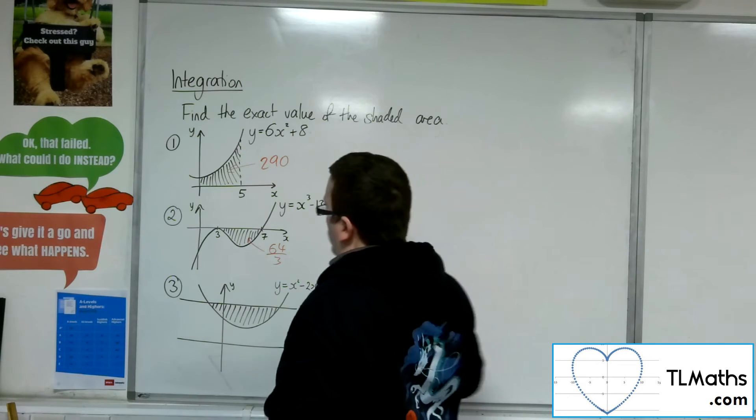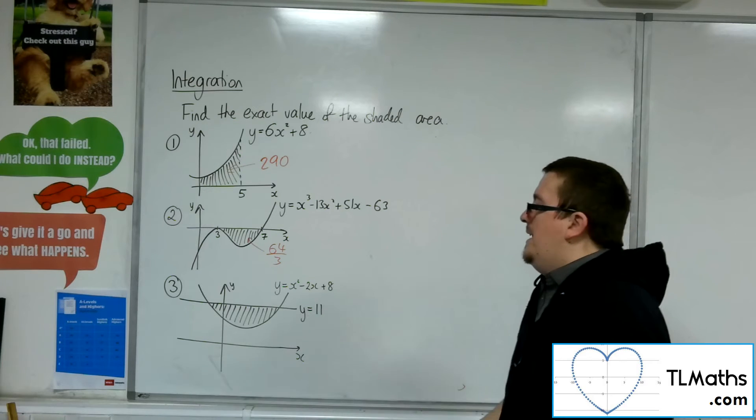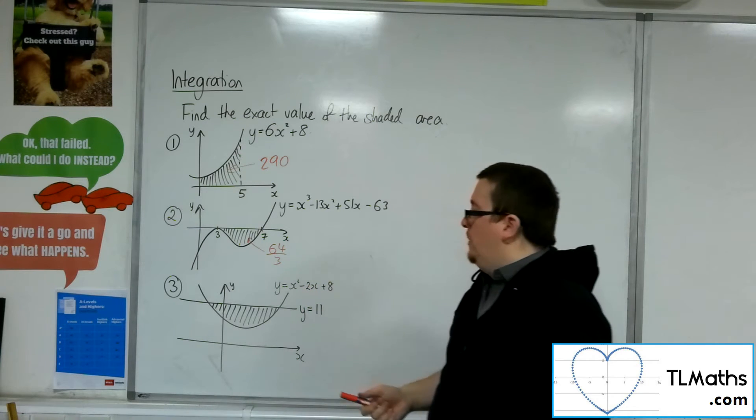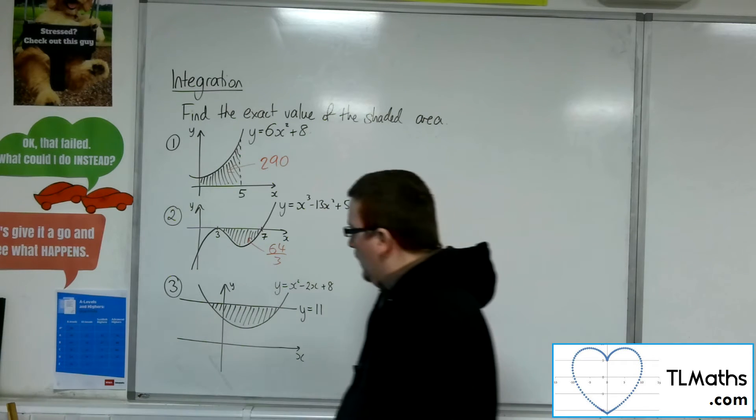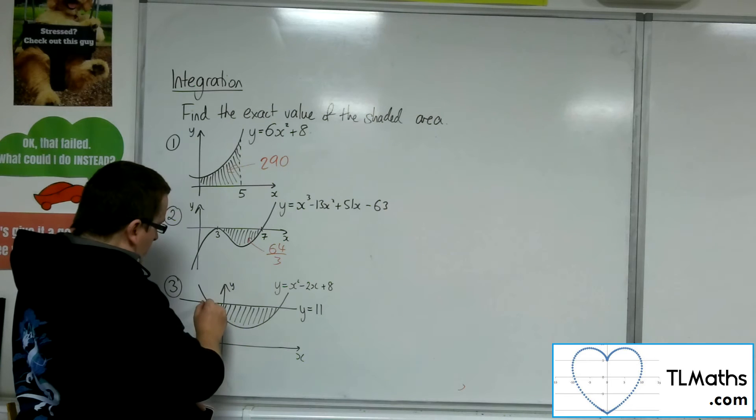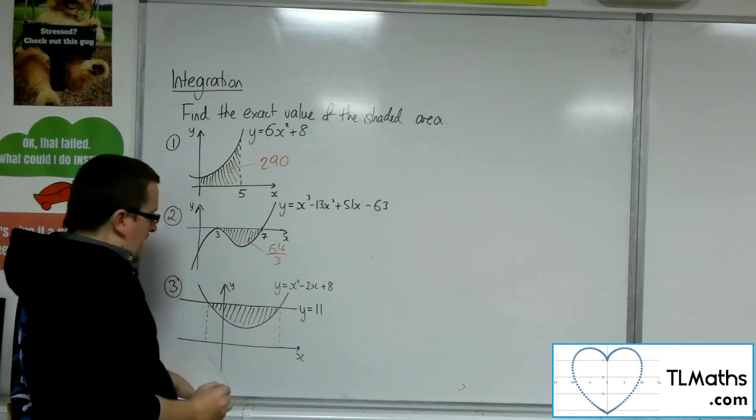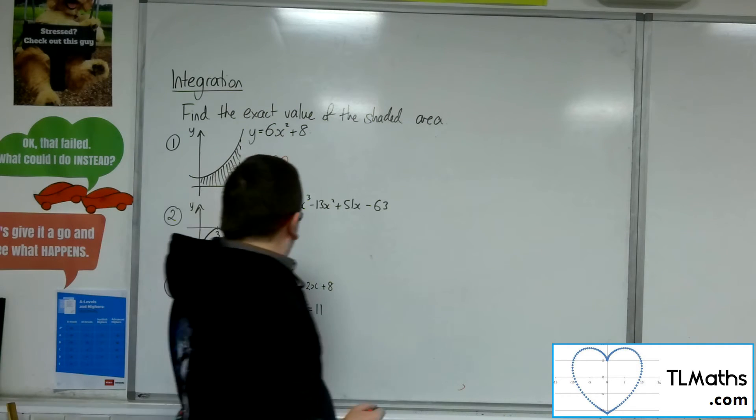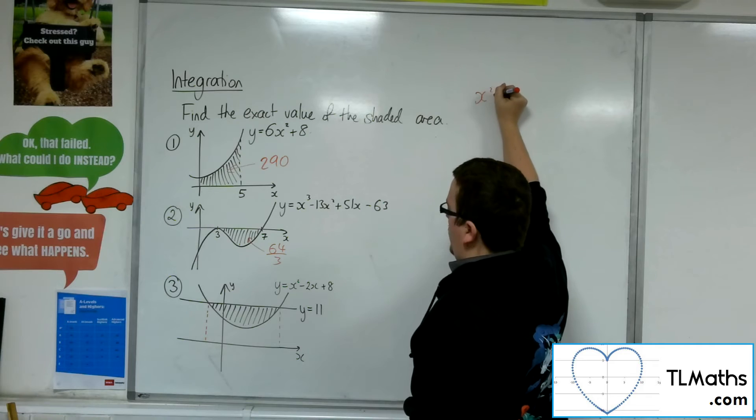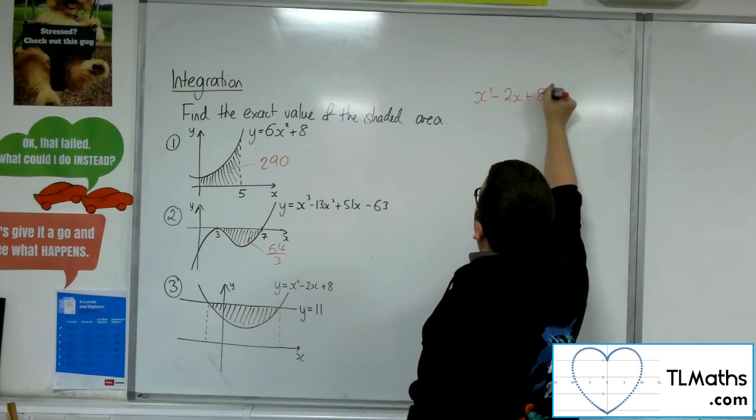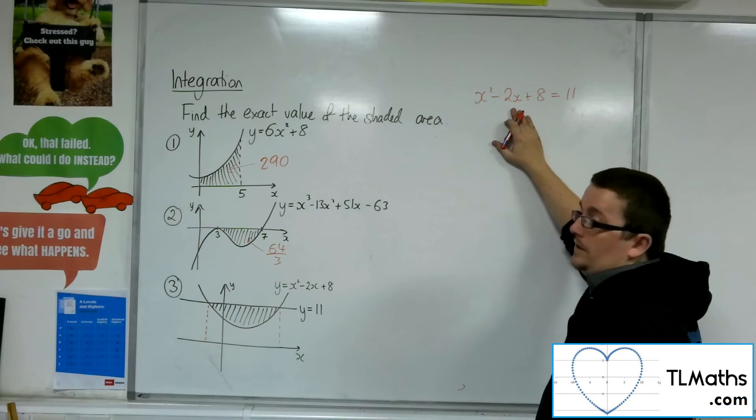Right, let's have a look at the last one. Number 3. We actually now have a curve, y equals x squared minus 2x plus 8, and a straight line, y equals 11. So, really, what I want to do is I want to figure out the x values of where these two things intersect. In order to do that, I'm going to have to put the x squared minus 2x plus 8 equal to the 11 to figure out where the line and the curve intersect.